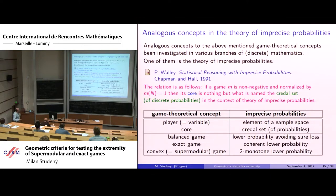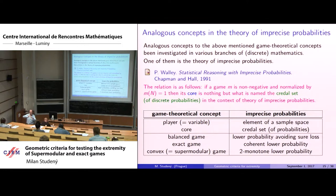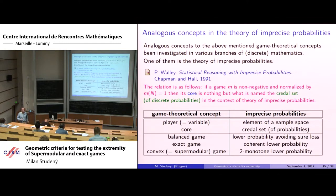Imprecise probabilities arise when one assumes uncertainty about the exact values of probabilities of certain states. Instead of one probability distribution, you consider a set of probability distributions — typically a convex set, called imprecise. In this framework, a balanced game corresponds to a lower probability avoiding sure loss, an exact game to a coherent lower probability, and a supermodular game to a two-monotone capacity.